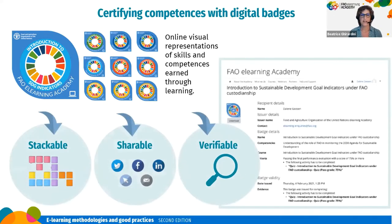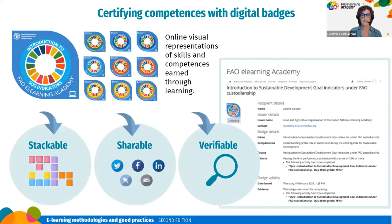Digital badges have three main features. They are stackable, so you can show a collection of knowledge, skills, and competencies coming from different sources — both formal and informal learning activities. They are shareable, so they can be displayed on professional and social networking platforms like Facebook, LinkedIn, and Twitter, and can also be embedded into web pages and digital email signatures. And they are verifiable because they embed metadata that describe the issuing organization, the kind of activity they correspond to, and the criteria used to assign that badge.